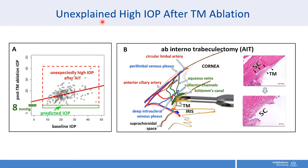There is an unexplained high IOP after TM ablation. When you remove the trabecular meshwork, you would expect the intraocular pressure to drop to the level of episcleral veins — about 8 mmHg. However, that only happens in one out of 300 patients in this study. The baseline IOP in fact correlates with the post-ablation IOP before drops are started, suggesting there must be significant outflow resistance in some patients.